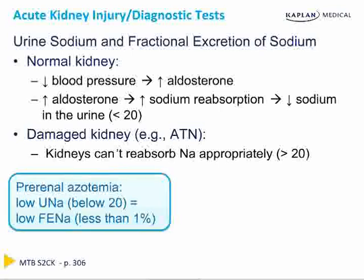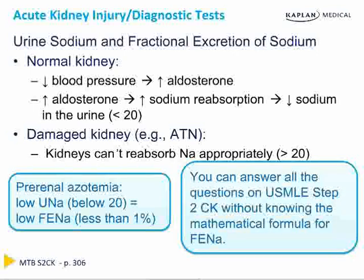To summarize: prerenal azotemia will have a urine sodium less than 20 and a fractional excretion of sodium (FENa) less than 1%. You don't need to memorize the mathematical formula for FENa for USMLE Step 2 — just remember the cutoff values. Urine sodium less than 20 and FENa less than 1% for prerenal; urine sodium greater than 20 and FENa greater than 1% for intrinsic ATN.